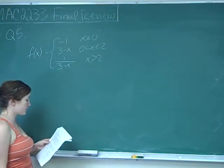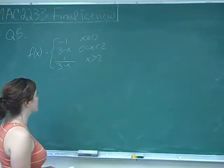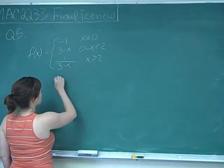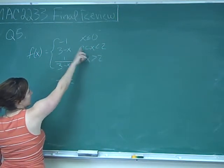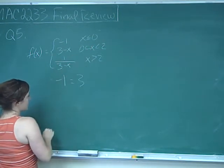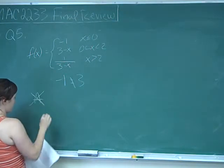Statement A says the limit as x approaches 0 from the right of f(x) equals f(0). But f(0) equals negative 1, and the limit as x approaches 0 from the right is 3. These are not equal, so A is not true.